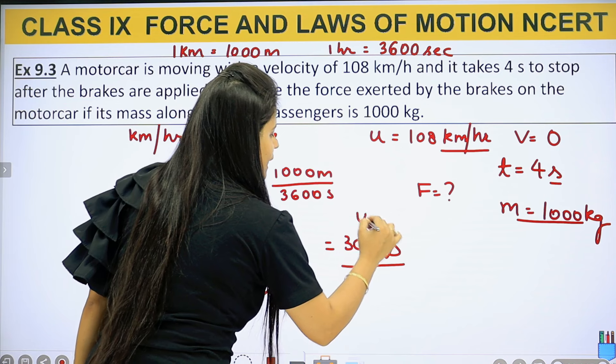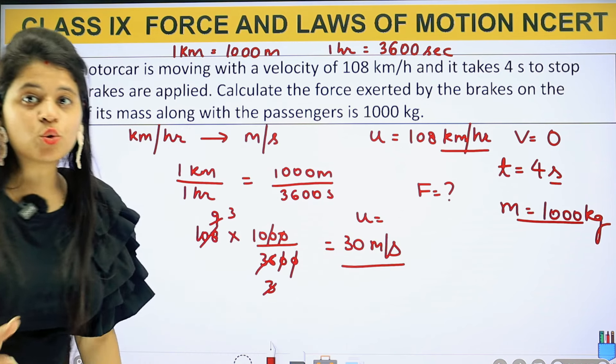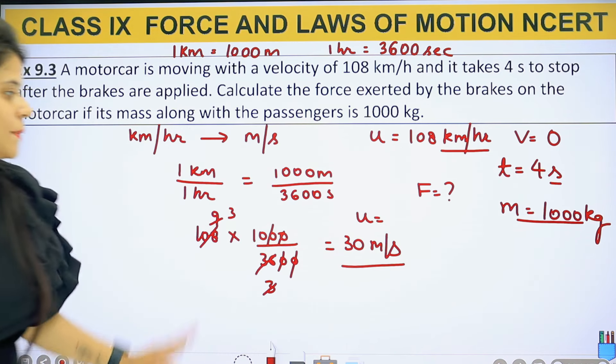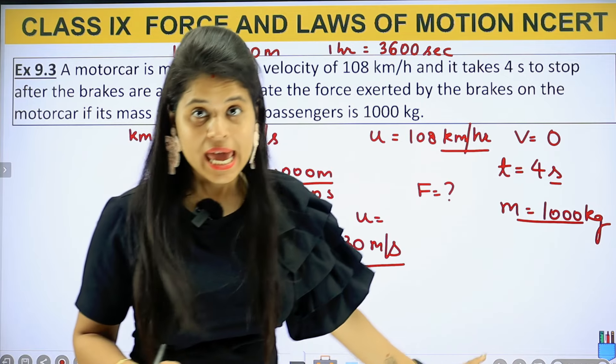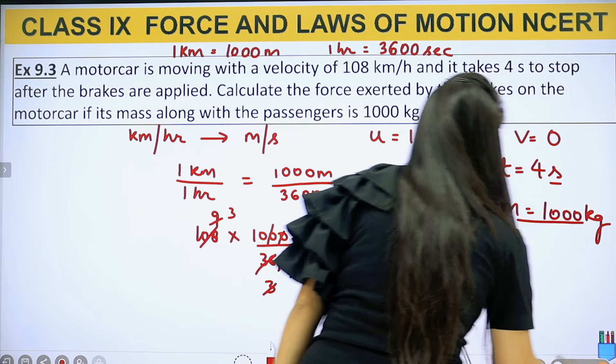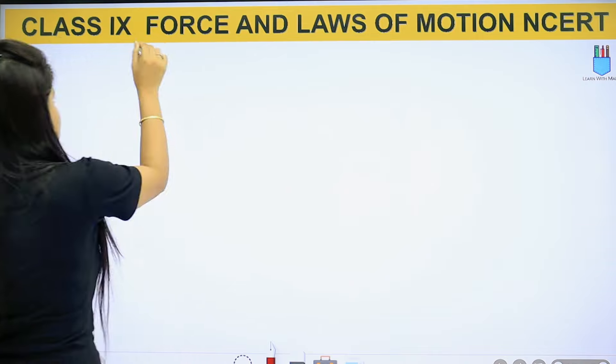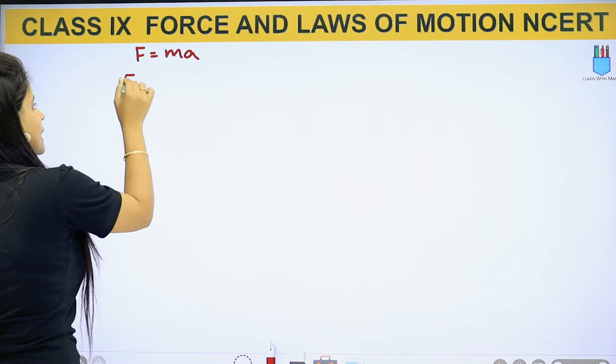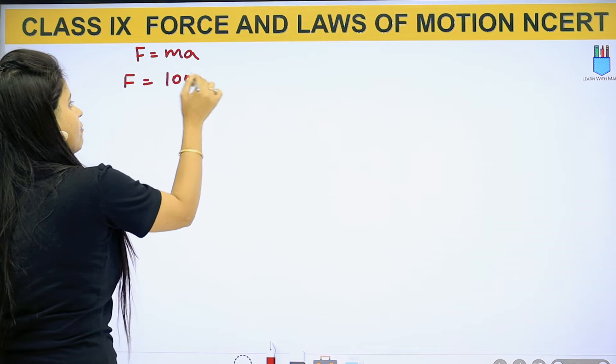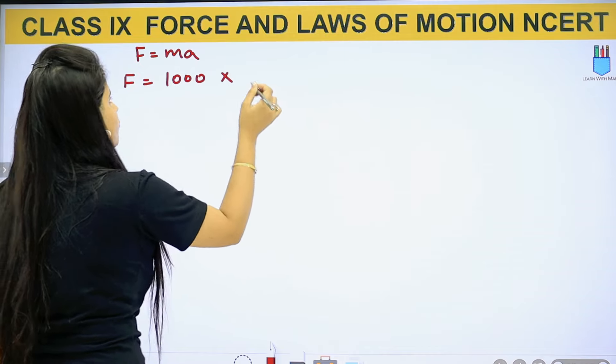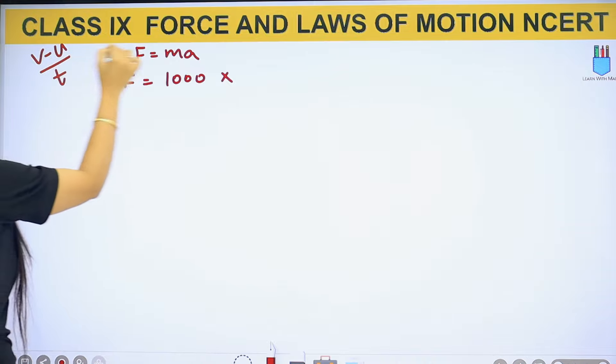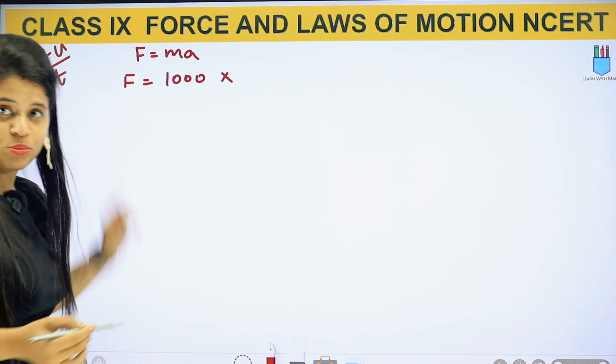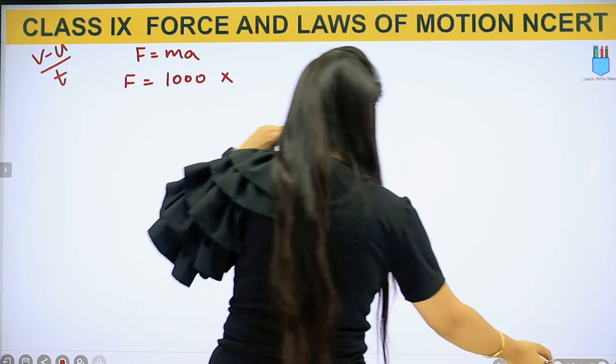Which means your initial velocity, that means u, is 30 meter per second. So now we have u, t, v, m. Force, we know that F equals to ma. So force we have to find. Mass we have given 1000, into acceleration. Formula is v minus u upon t.